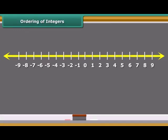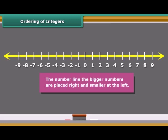Let us again observe the integers which are represented on the number line. We know that 9 is greater than 5 and on the number line is 4 points right of 5. Similarly, 5 is greater than zero, so placed right to it. Since zero is to the right of minus 2, it is greater than minus 2. Again, minus 2 is on the right of minus 7, so minus 2 is greater than minus 7. Thus, we see that on the number line, the bigger numbers are placed right and smaller at the left.